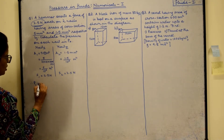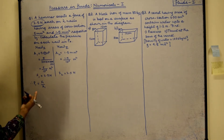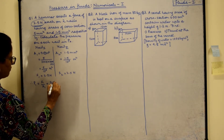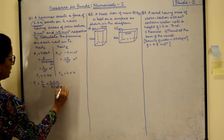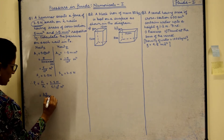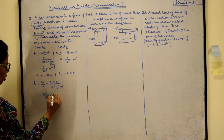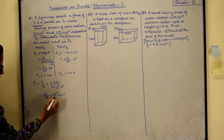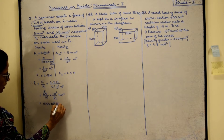So P1, the pressure on the first nail, equals F1 upon A1 — that is, thrust upon area. Substituting: force is 2.5 newton divided by 5 × 10⁻⁶ m². Remove the decimal to get 25 upon 10 divided by 5 upon 10⁶. The 5 goes to the denominator and 10⁶ comes to the numerator, giving 0.5 × 10⁶ newton per meter square.